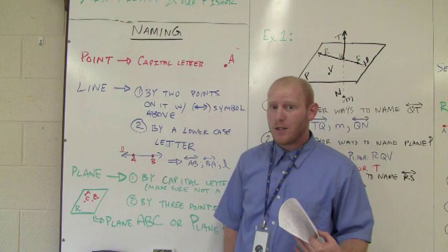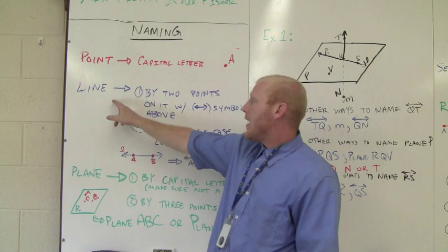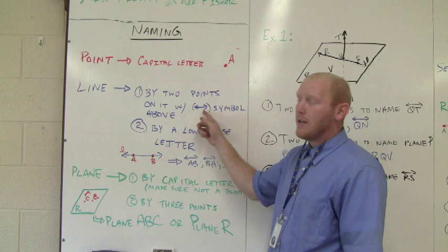First we have a point. They decided that it would be represented by a capital letter. So this would be called point A. Then we go to a line. There's two ways to name a line. Either we can name it by two points on it with a line symbol above it, or by a lowercase letter.